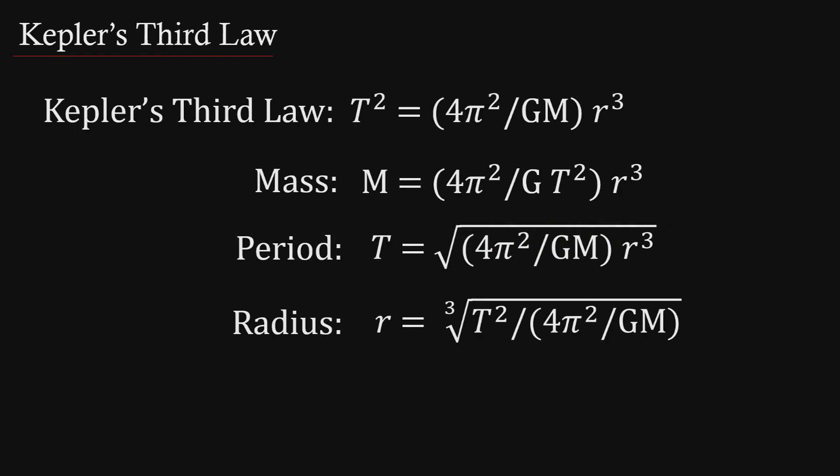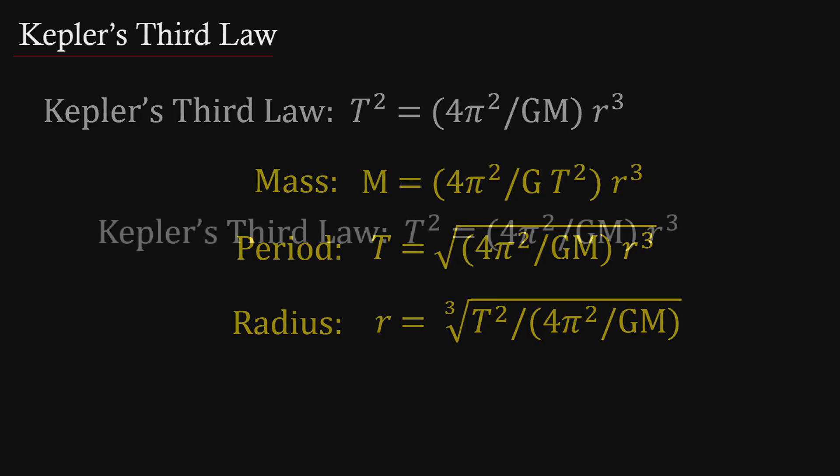Others have been able to define the mass of a planet in terms of the remaining elements, or the period of the planetary orbit in terms of the square root of the remaining elements, or even the radius of the planetary orbit in terms of the cube root of the remaining elements. But what is not being defined here is the dimension that the planetary orbit is in.